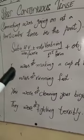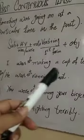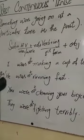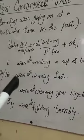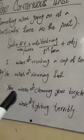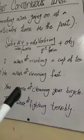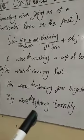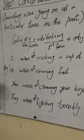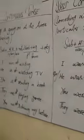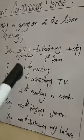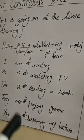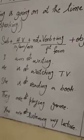Present continuous negative: I am not writing. He is not watching TV. She is not reading a book. Past continuous negative: I was not making a cup of tea. He was not running fast. You were not cleaning your bicycle. They were not fighting terribly.